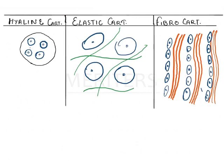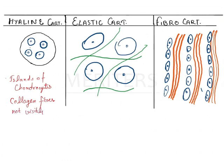In hyaline cartilage, you will see islands of chondrocytes, and the collagen fibers in the matrix will not be visible. These are two very striking features of hyaline cartilage that will help you identify it when a histological section is given.